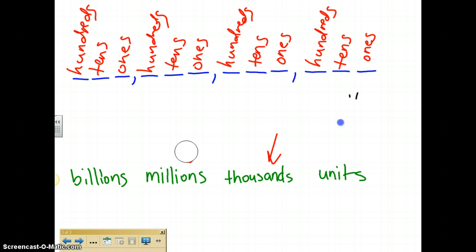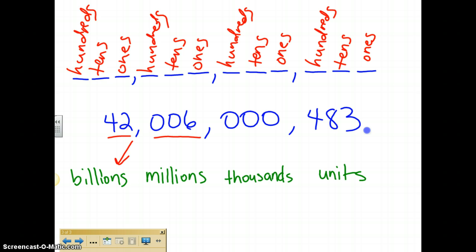So if we take another number like 42,006,000,483, let's read this number. Again, you see where they're lined up. So we've got to read this number first. That's 42 billion, 006 million. We don't have any thousands, so we don't read that. 483. So let's read it again: 42 billion, 006 million, 483. We just skip that thousands family because we don't have anything there, so there's no need to talk about it.